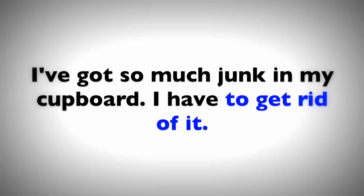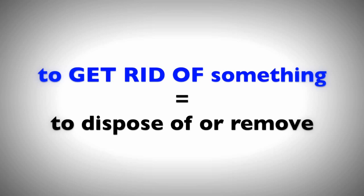Number four: 'get rid of something or someone'. Example: 'I've got so much junk in my cupboard, I have to get rid of it.' This is a very common way to say dispose of or remove something. We don't usually say 'dispose' in everyday speech — we say 'get rid of it'. For example: 'I've got an old apple in the fridge — get rid of it, put it in the bin.'